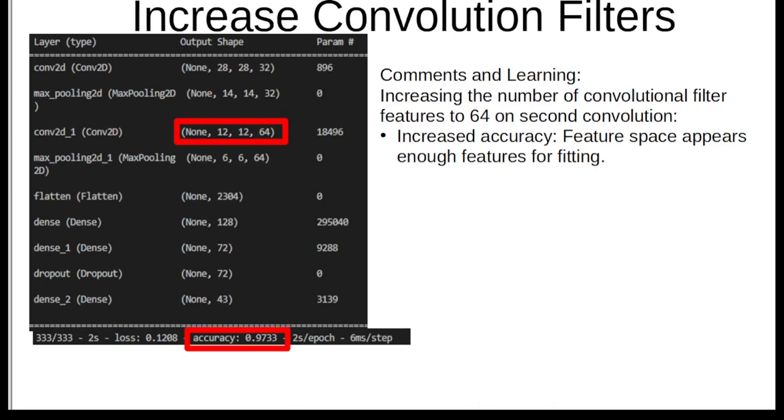After that, I went to the second set of convolutional filters and increased that number to 64, and bumped down the first one to 32. And that had a very good accuracy, 97 and a third. That had a good effect on the accuracy of the neural network overall.